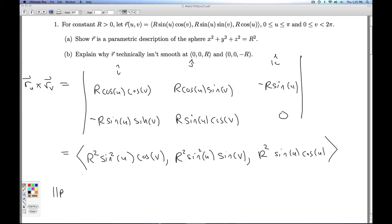Now, if I take the magnitude of this vector to see where it's 0, I'm going to get the square root of this squared plus this squared. Well, that's going to give me r to the 4th sine to the 4th cosine squared v plus r to the 4th sine to the 4th sine squared v. Pythagorean magic gives me r to the 4th sine to the 4th u plus here, I get an r to the 4th sine squared u cosine squared u.